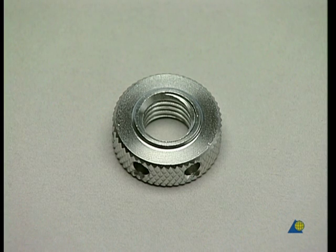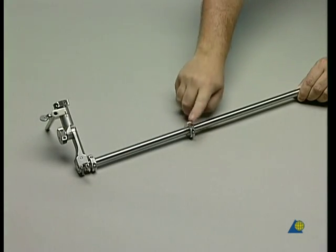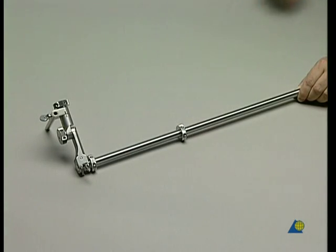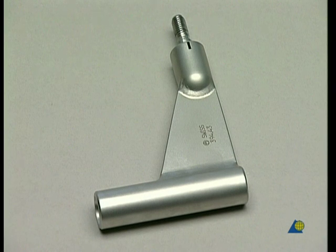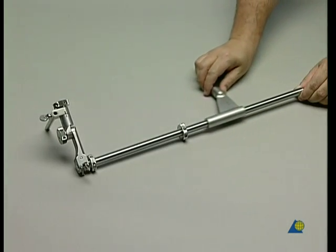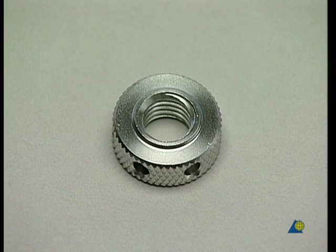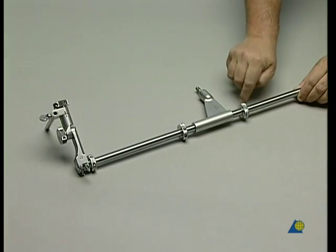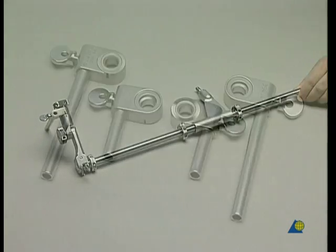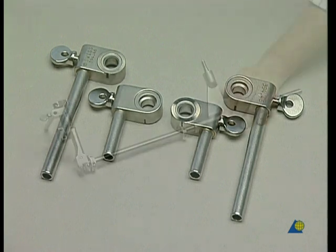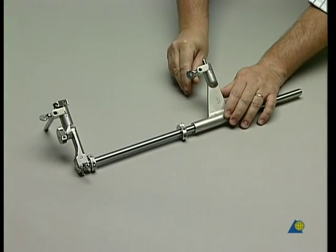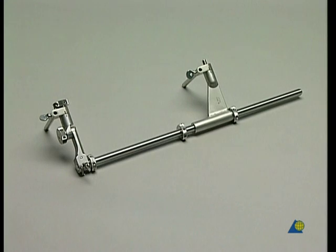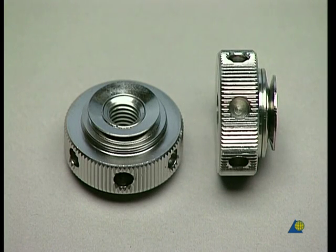A second knurled nut is screwed from the opposite end onto the threaded rod. The sliding carriage is mounted and secured with a third knurled nut. We mount a long holding sleeve on the sliding carriage and secure with a nut with spring washer.